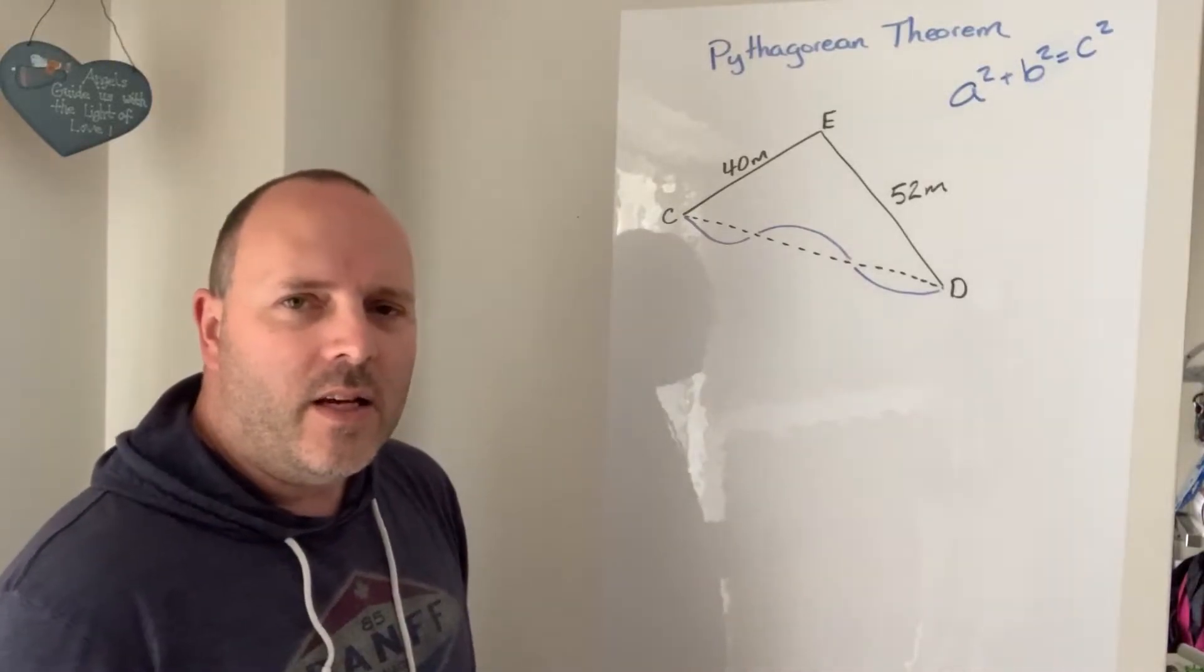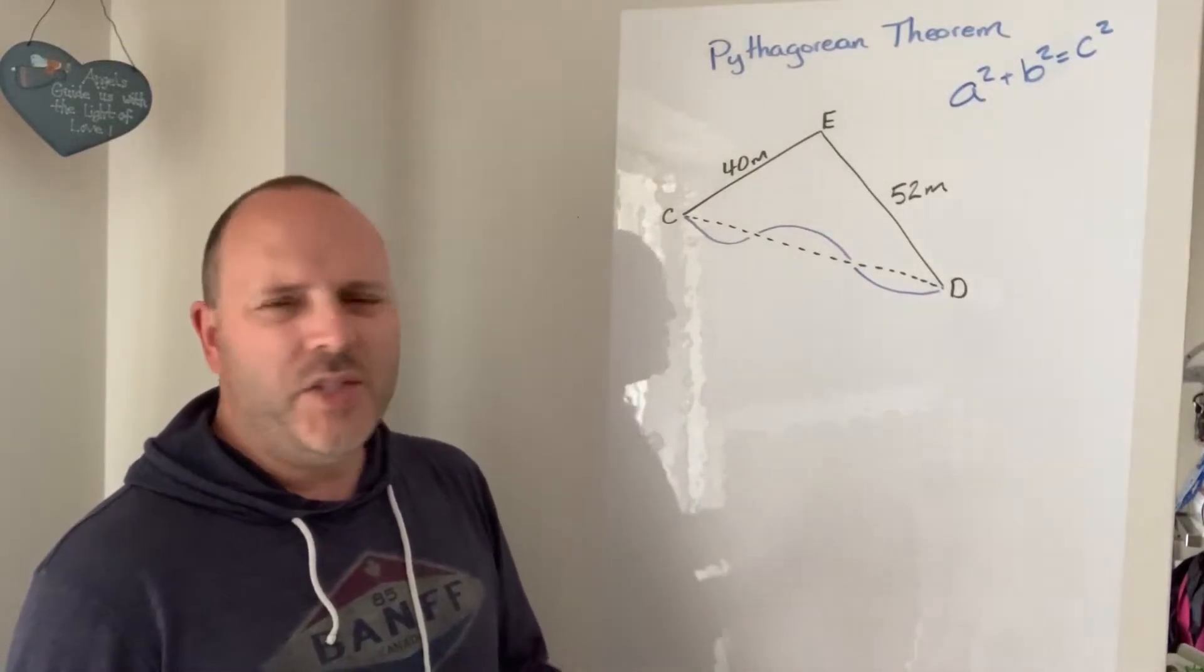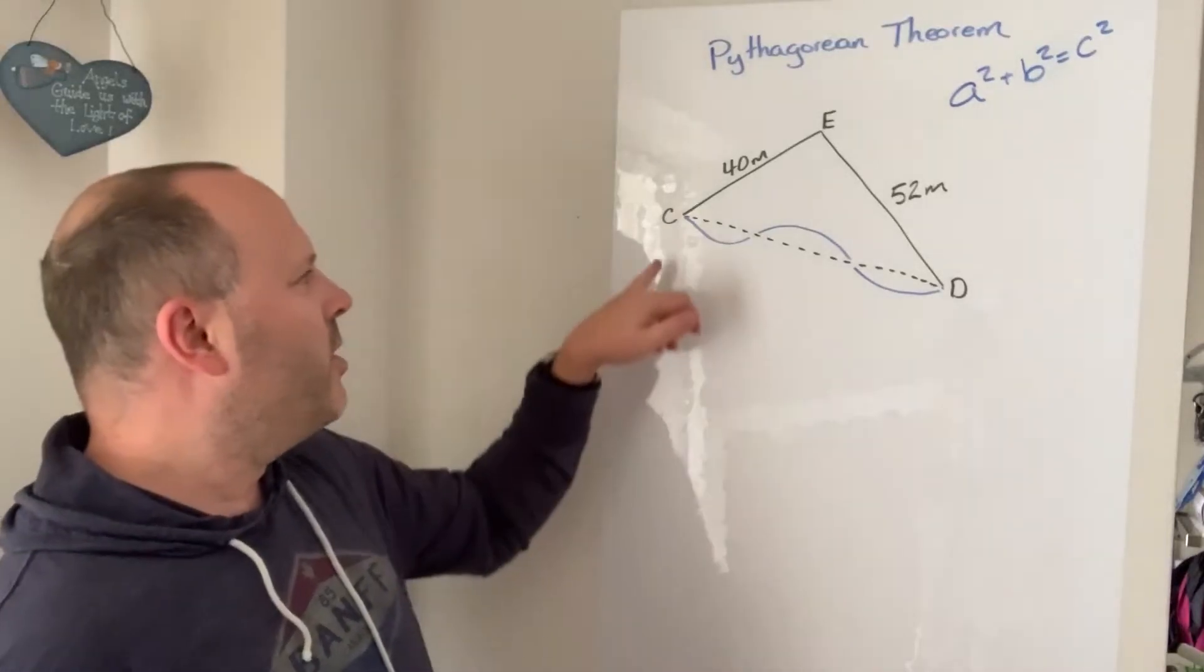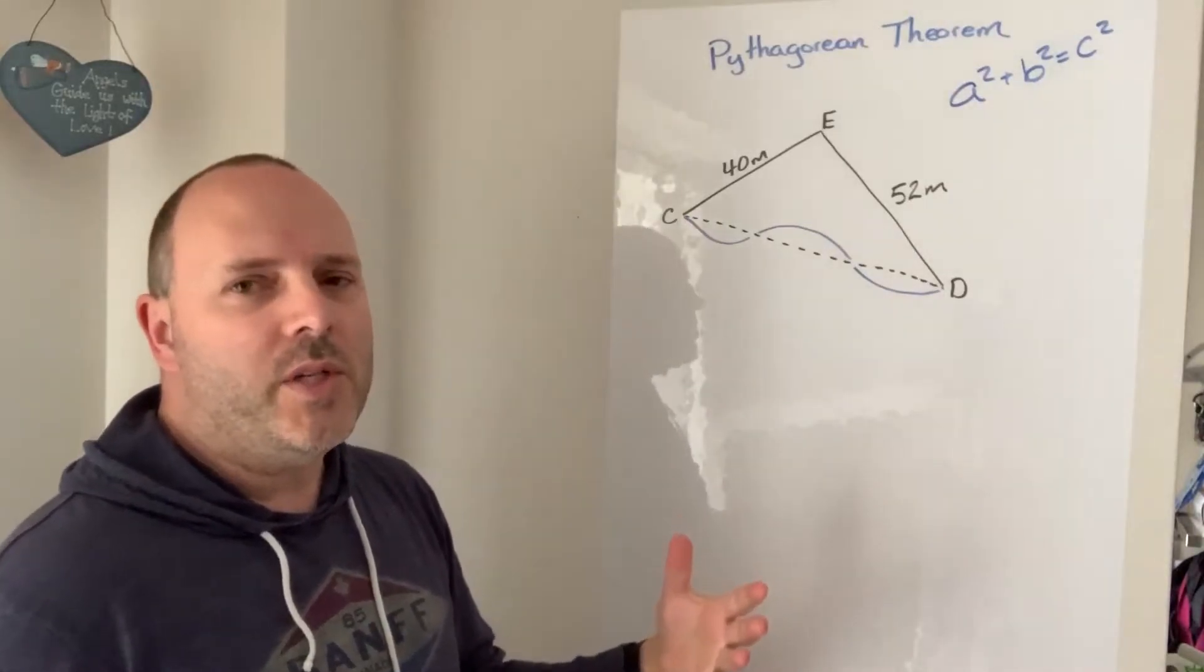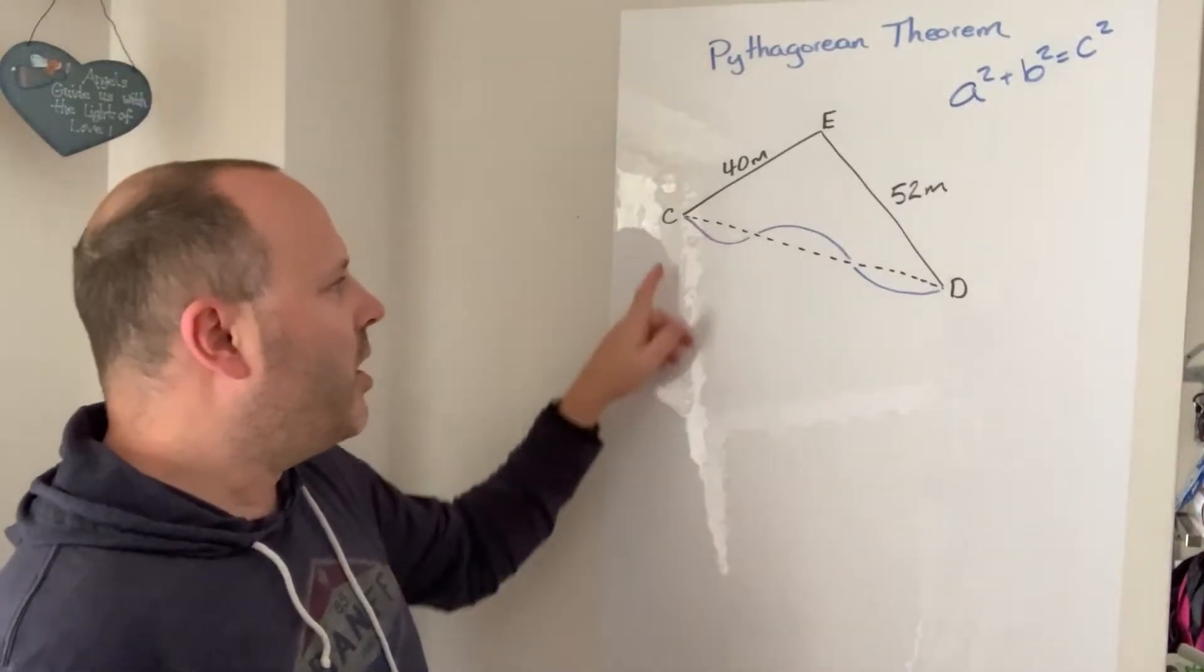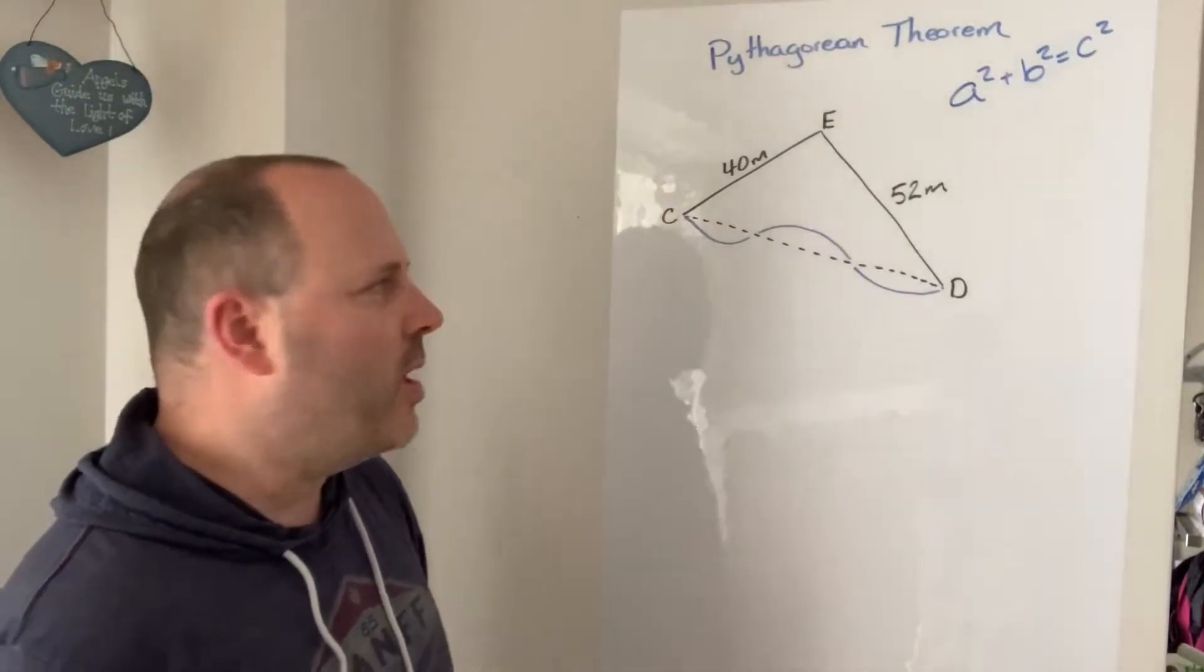Now it's not exactly on the hypotenuse of the triangle but it's sort of close enough, so I'm going to use the Pythagorean Theorem to figure out the distance from C to D and my question is how much shorter is the walk if you take the pathway instead of going by the sidewalks?